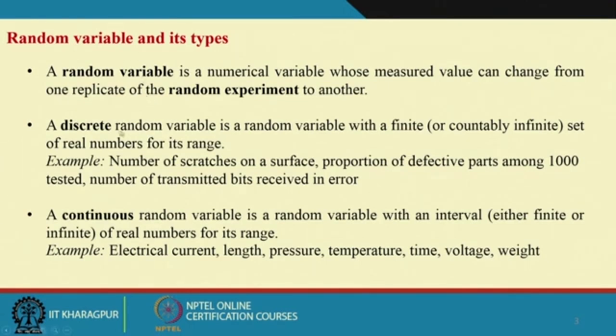For discrete cases, we say the number of scratches, number of defective parts, number of transmitted bits in error. But if we compute a proportion, it can take many values within a range. So instead of proportion, we say number.